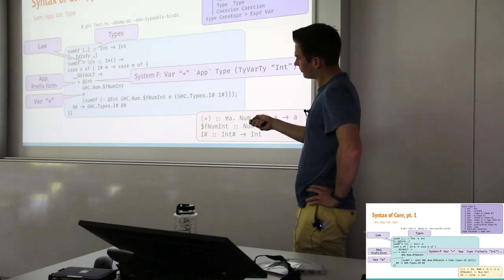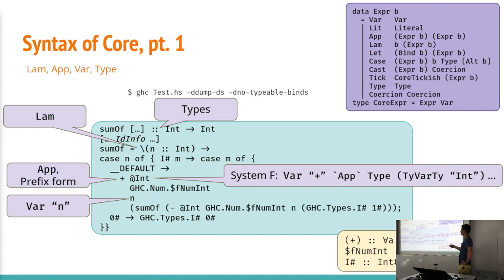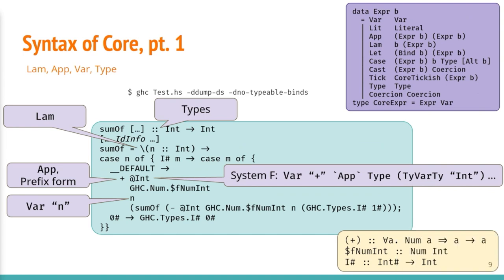An interesting aspect of Core is that you've got type applications, which occur whenever you have polymorphic functions. This stems from its heritage from System F. Explicitly typed polymorphism means that you've got to pass around type arguments in a first-class way, just like you would pass around value arguments. Similarly, type class methods and type classes have been desugared to explicit dictionary passing. These bindings here correspond to the Num instance for Int. They are generated during type checking.